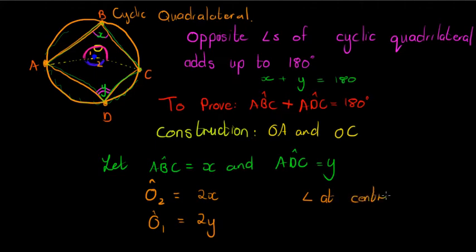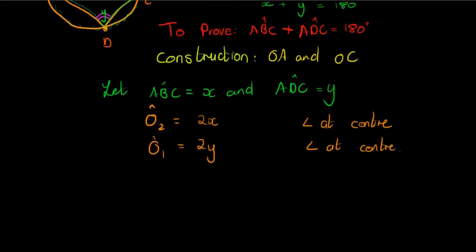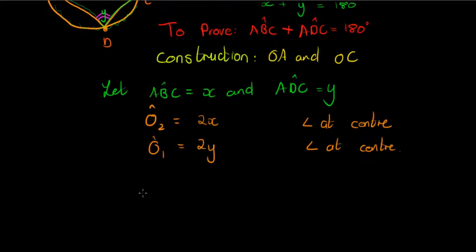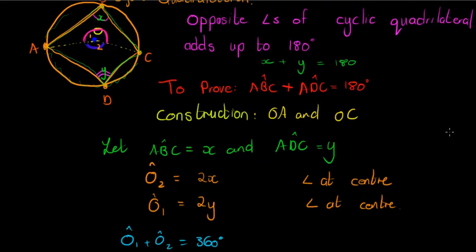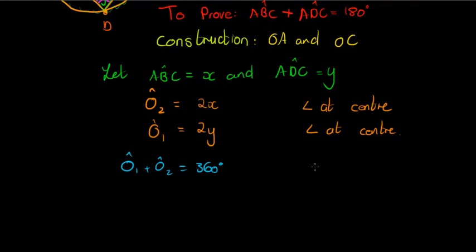What's our reason? What theorem are we using? Thank you. Angle at center in both cases I used angle at center. Now I can add O1 plus O2. I know they're equal to 360 degrees.